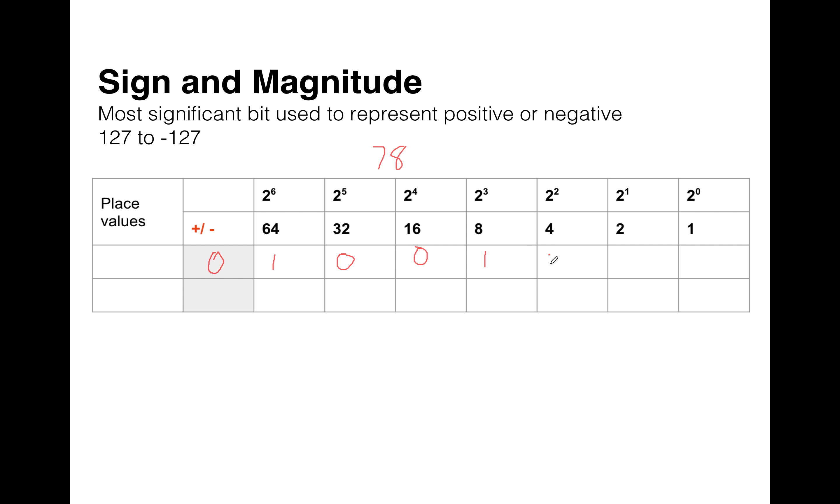If we want to represent -78, it's exactly the same process, but we've got a one in the first column and then we do the same process. The remainder is 14 again, so we do 00111110. What we have here is positive 78 and negative 78, and the limitations of this...